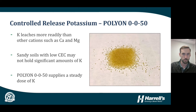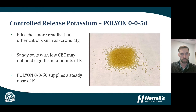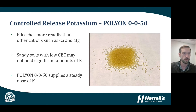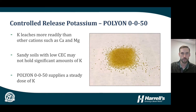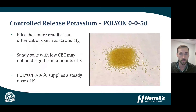One way to prevent potassium loss through leaching is to apply a coated potassium product such as Polyon 0-0-50, a coated Sulfate of Potash. This polymer coating technology allows for time-release — consistently releasing potassium through the coating over time so that potassium remains available to the plant throughout the release period.